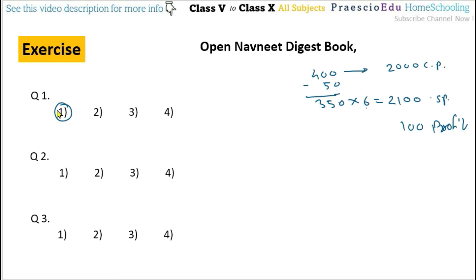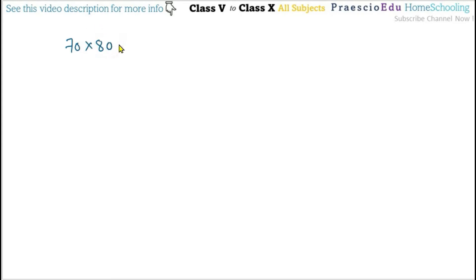Question number 2. Lalitha Bai bought 70 cookers at rupees 800 each. The cost of transport was rupees 1250. She sold the cookers for rupees 63,000. What was her profit? So total 70 cookers, each at 800 rupees. 70 multiplied by 800: 7 multiplied by 8 is 56, so 56,000 is the cost price.